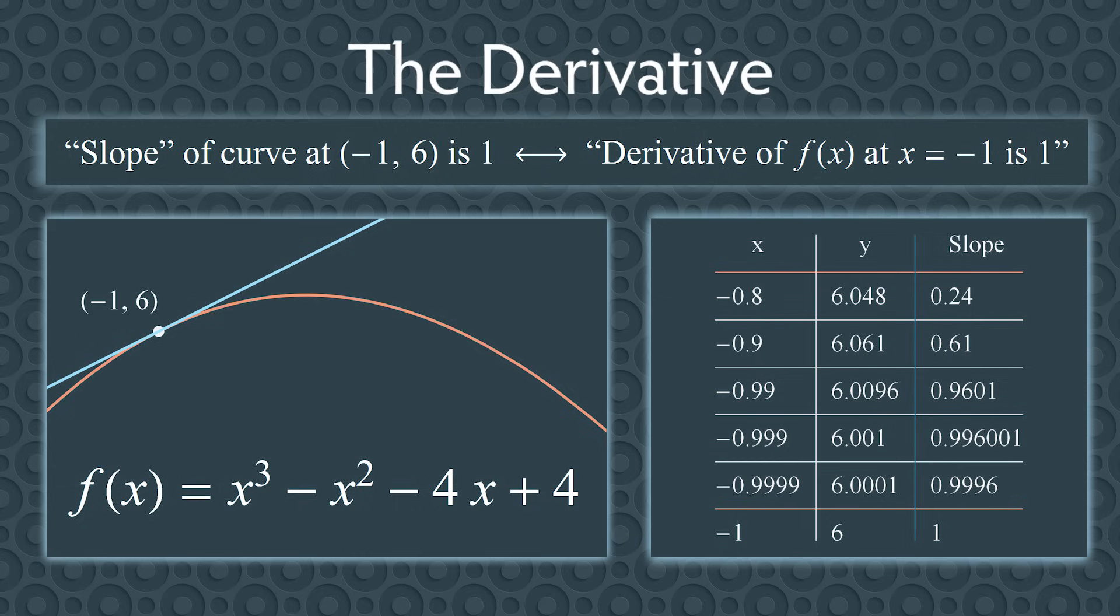Luckily, you won't have to do this every time you want to measure the rate of change at a point. In calculus, you'll learn how to find a function which will give you the slope of any tangent line to the graph. This function is also called the derivative.